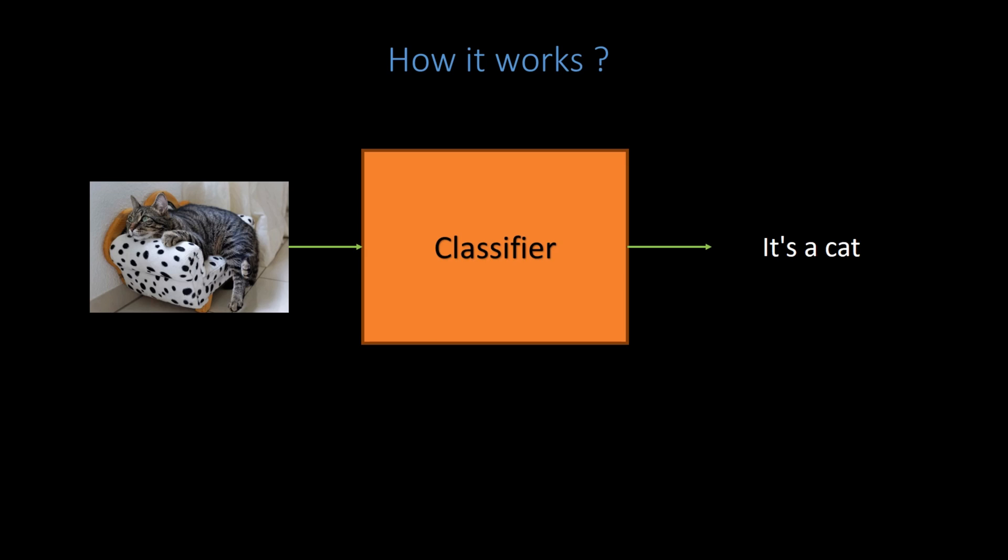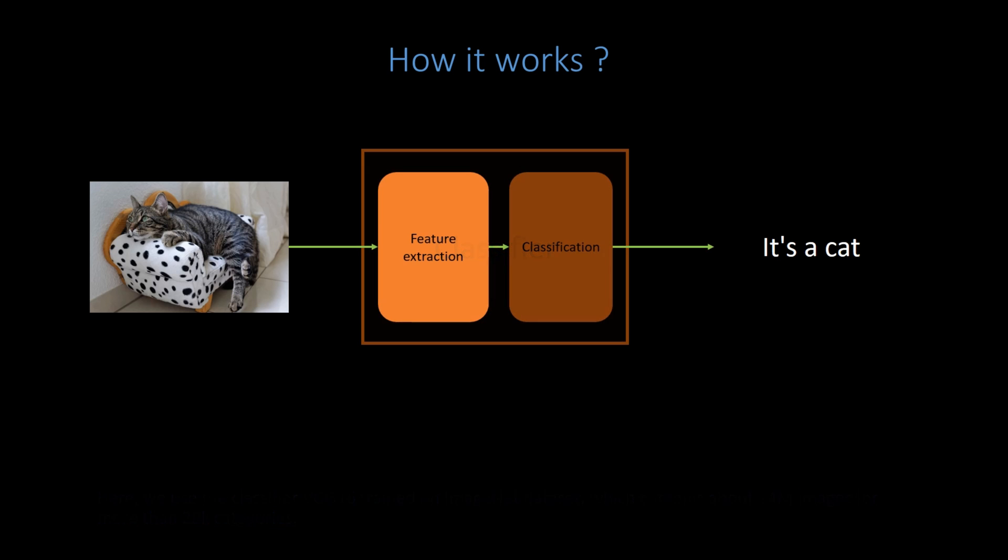In order to explain how style transfer works, let's introduce first another popular type of neural networks in computer vision, the classifier. The job of the classifier is to take one input image, and to predict what is the main object present in the image. Typically, such a network is trained on millions of images with objects from thousands of categories.